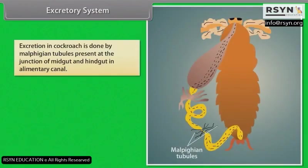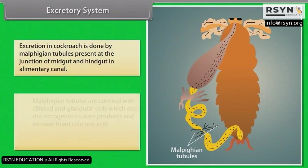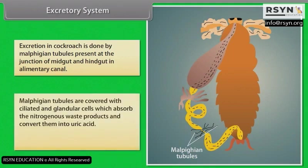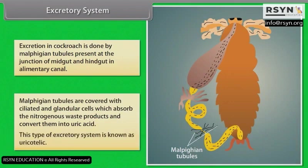Excretory System: Excretion in cockroach is done by Malpighian tubules present at the junction of midgut and hindgut in the alimentary canal. Malpighian tubules are covered with ciliated and glandular cells which absorb nitrogenous waste products and convert them into uric acid. This type of excretory system is known as uricotelic.